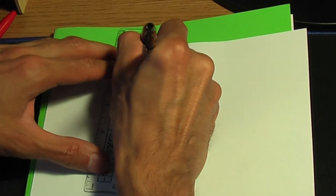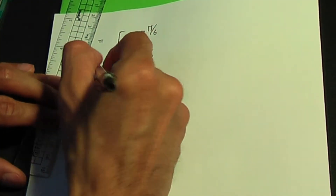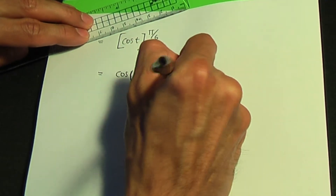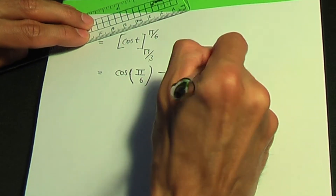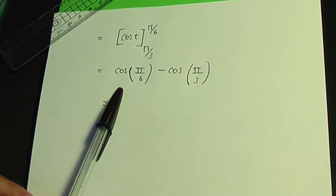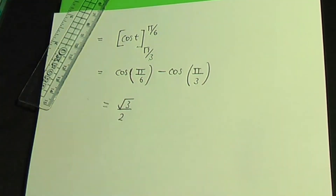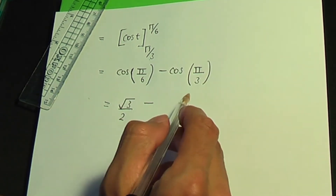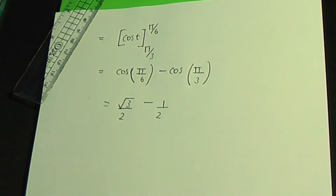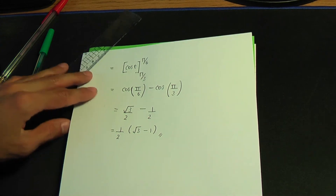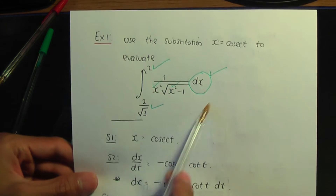We apply the limits to cos t between π/3 and π/6. The upper limit goes in first: cos(π/6) minus cos(π/3). cos(π/6) is the standard result √3/2, and cos(π/3) is also a standard result: 1/2. Taking a common factor of 1/2 gives (√3 − 1)/2. This is the final solution.